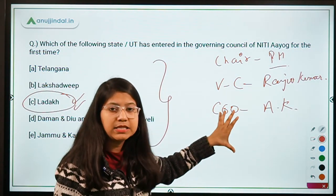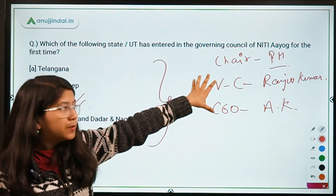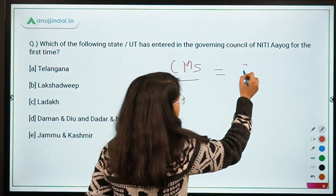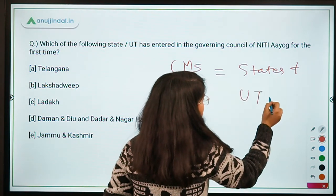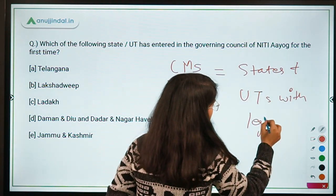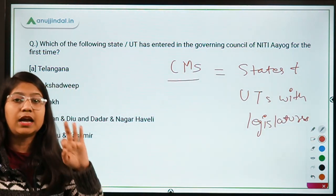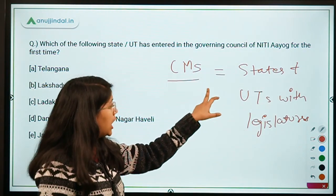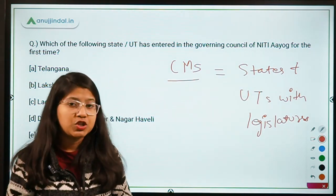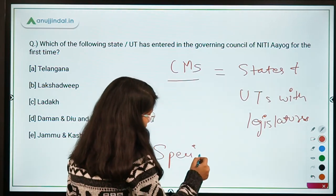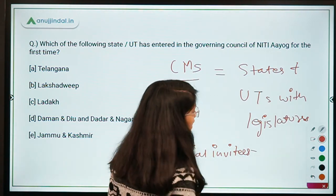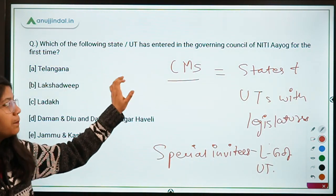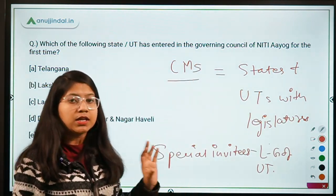Apart from the main designations, there are members in this governing council as well. The members are the Chief Ministers of all states and union territories with legislatures. There are three union territories with legislatures in India: Delhi, Puducherry, and Jammu and Kashmir. The special invitees are the Lieutenant Governors of all remaining union territories. That is the complete constitution of the governing council of NITI Aayog.